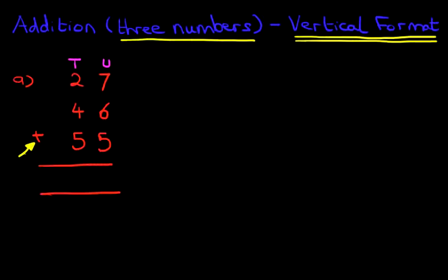We start with the units. And what we have to do is we're going to be adding all three numbers here. We've got 7, 6 and 5. So let's start at the top. What is 7 plus 6? 7 plus 6 is 13. Let's write it in small writing here. And now we have to add the 5. So 13 plus 5 is 18.